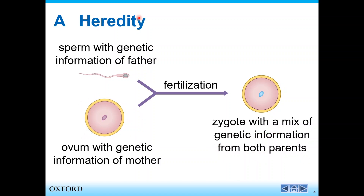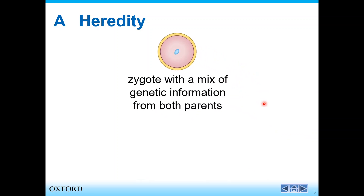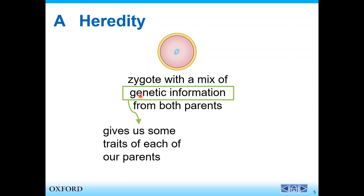Half from your mother and half from your father are combined together by fertilization. Then the zygote forms — the zygote is you. After the development and implantation in the uterus, you form the fetus and then the baby. So you have half the genetic information from your father and half from your mother, which gives you some traits of each of your parents, and that is why we look like our parents.